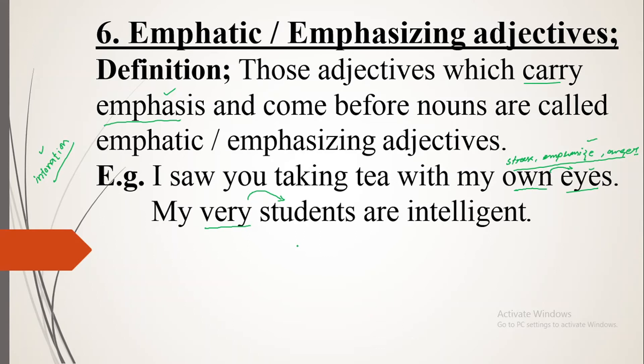Once again, to show anger: 'I heard you abusing with my own ears' — and you are not agreeing. In the same way: 'My very friends are honest' — here you are showing emphasis or stress. So 'own' and 'very' are your emphatic and emphasizing adjectives which carry emphasis and show anger. That is known as emphatic or emphasizing adjectives. Hope you got this mini lecture — wish you best of luck, see you next time. Goodbye.